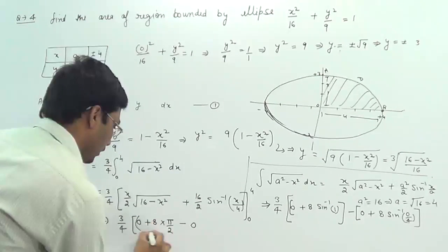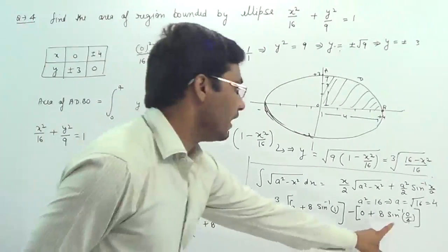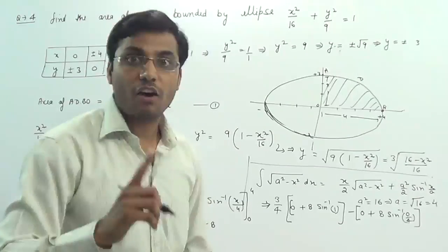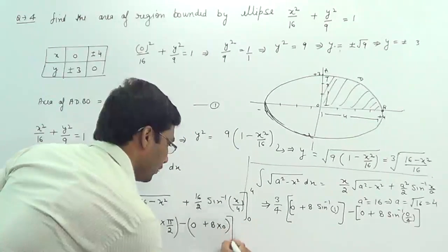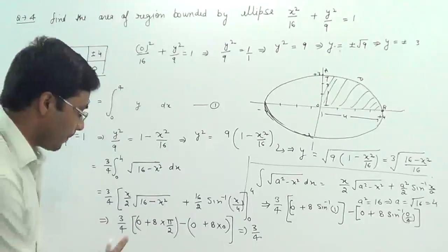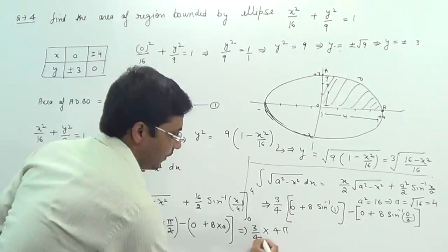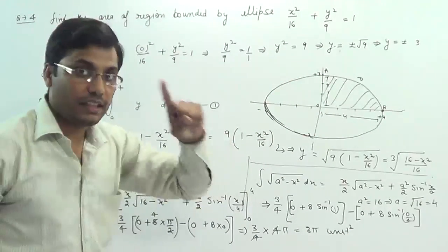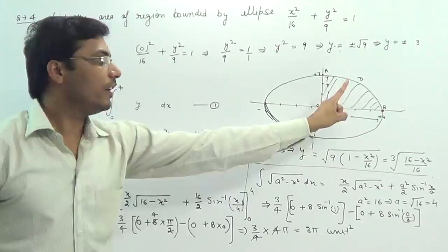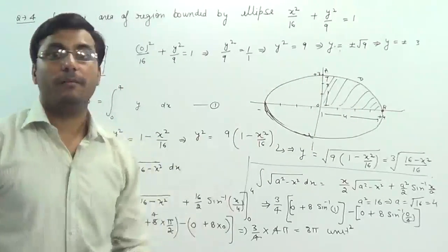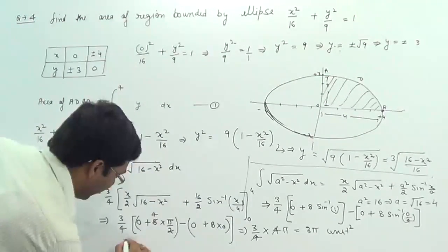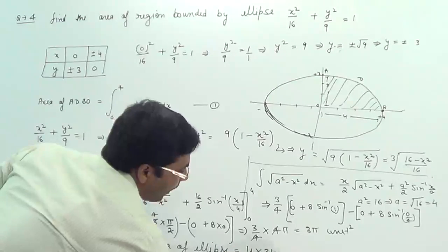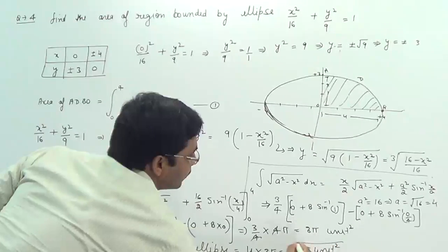Minus the lower limit: at x = 0, the first term is 0, and sin⁻¹(0/4) = sin⁻¹(0) = 0. So the lower limit contributes 0. After calculating, (3/4) × 8 × π/2 = 3π. The whole area of the ellipse is 4 × 3π = 12π square units.